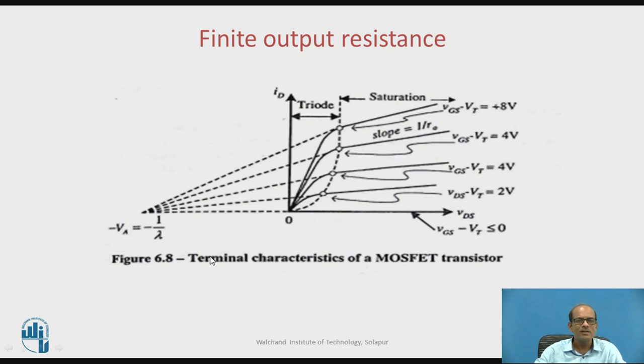In this way the value of lambda can be obtained, and once lambda is obtained, you can estimate the increase in drain current due to short channel effect. In summary, short channel effect is nothing but due to increase in VDS, the depletion layer formed between drain and substrate penetrates into the channel, and the effective length of the channel is reduced, and thereby there is an increase in the drain current with increase in VDS in the saturation region.